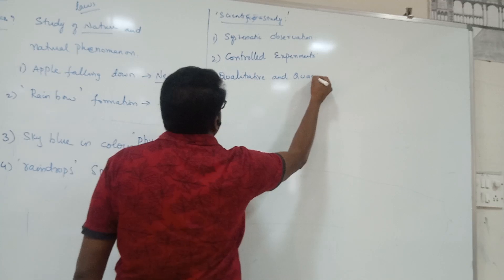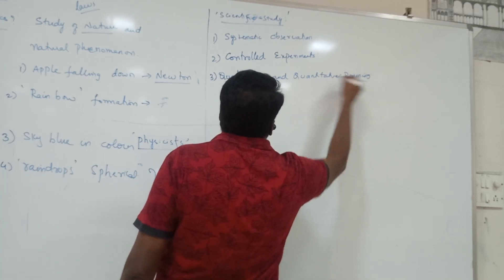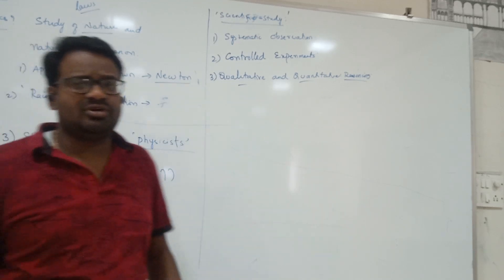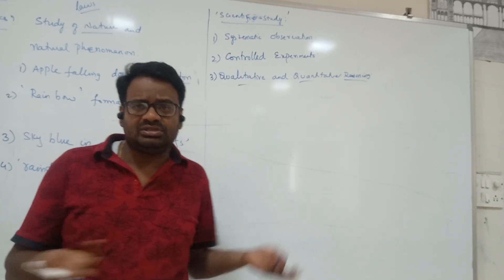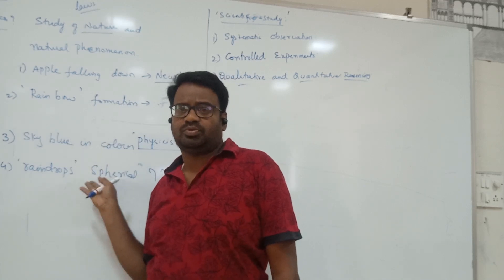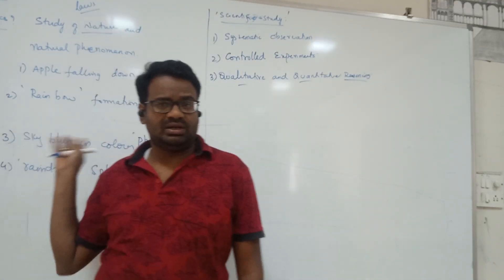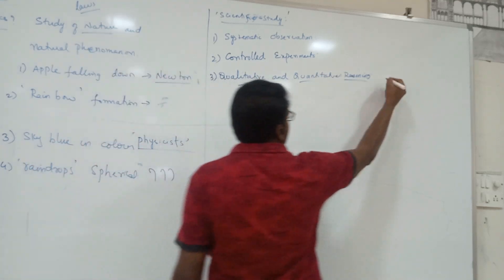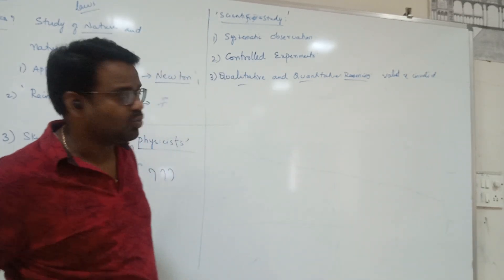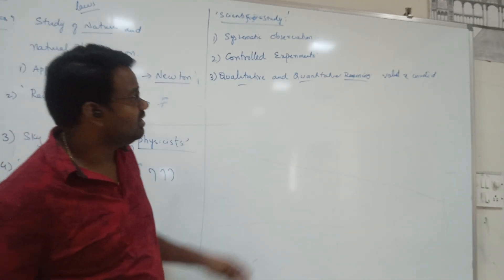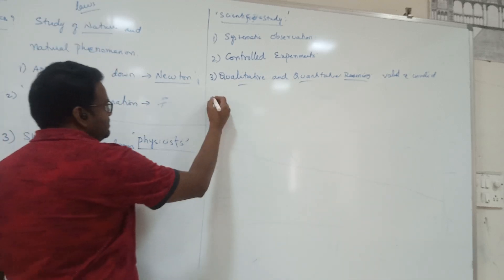The third one is qualitative and quantitative reasoning. We should not discuss unwanted things. Qualitative and quantitative is about valid and invalid points. If I talk about something not related to the subject — like a chair or a fan — that becomes unwanted. There must be order. Valid and invalid points must be considered: how much the study helps us understand things, and what is of no use.